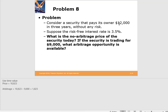Next, a security pays $12,000 in three years with no risk; the risk-free rate is 3.5%. What is the no-arbitrage price? Using the time value of money spreadsheet, the current value should be $10,823. If you can buy it for $9,000, you would — it's worth $10,823 — and the arbitrage gain is $1,823, the difference between the risk-free value and the offered price.